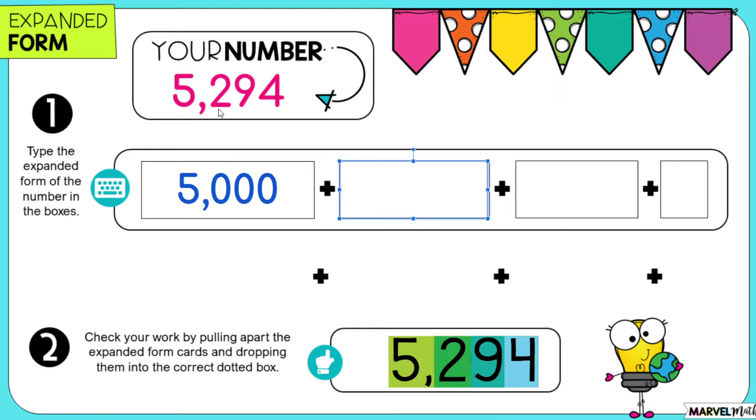Then I need to show the value of the 2, so that will be 200. And the value of the 9, it's in the 10s place, so the value is 90. And the value of the 4 in the 1s place is 4.